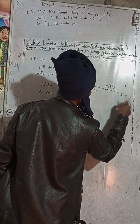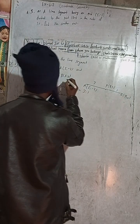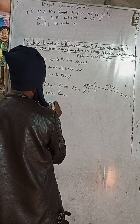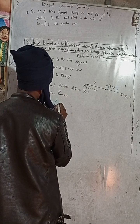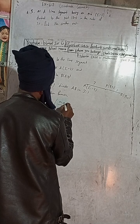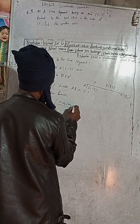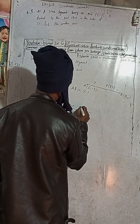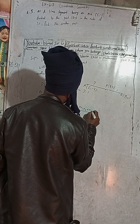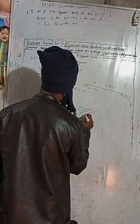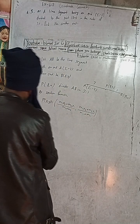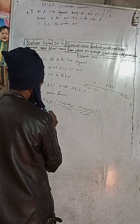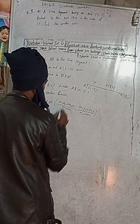Therefore, by the section formula: P(x, y) is equal to (m1·x2 + m2·x1) divided by (m1 + m2), and (m1·y2 + m2·y1) divided by (m1 + m2). This is the formula. P(x, y) means P is (8, 4).